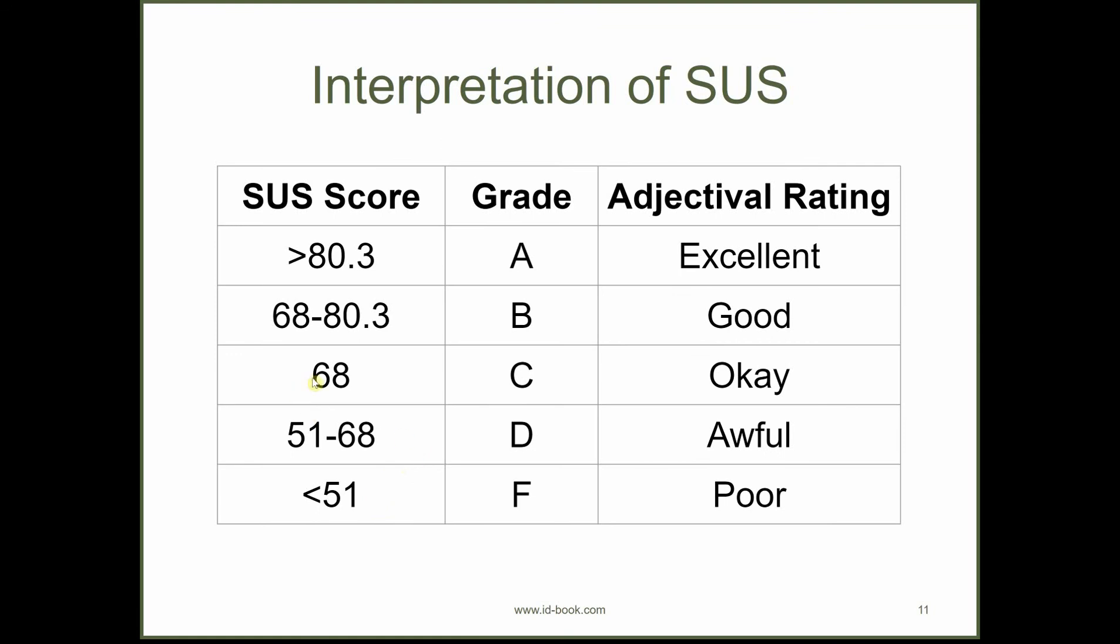If your score is 68, then you can give a grade of C to your system, which means that the system is okay to use in terms of its usability. But if the score is anything less than 68, if it's 51 to 68, you can still give it a grade of D, but it's awful. It's very bad usability. Grade less than 51 just means really, really bad. You have to completely redesign your website.